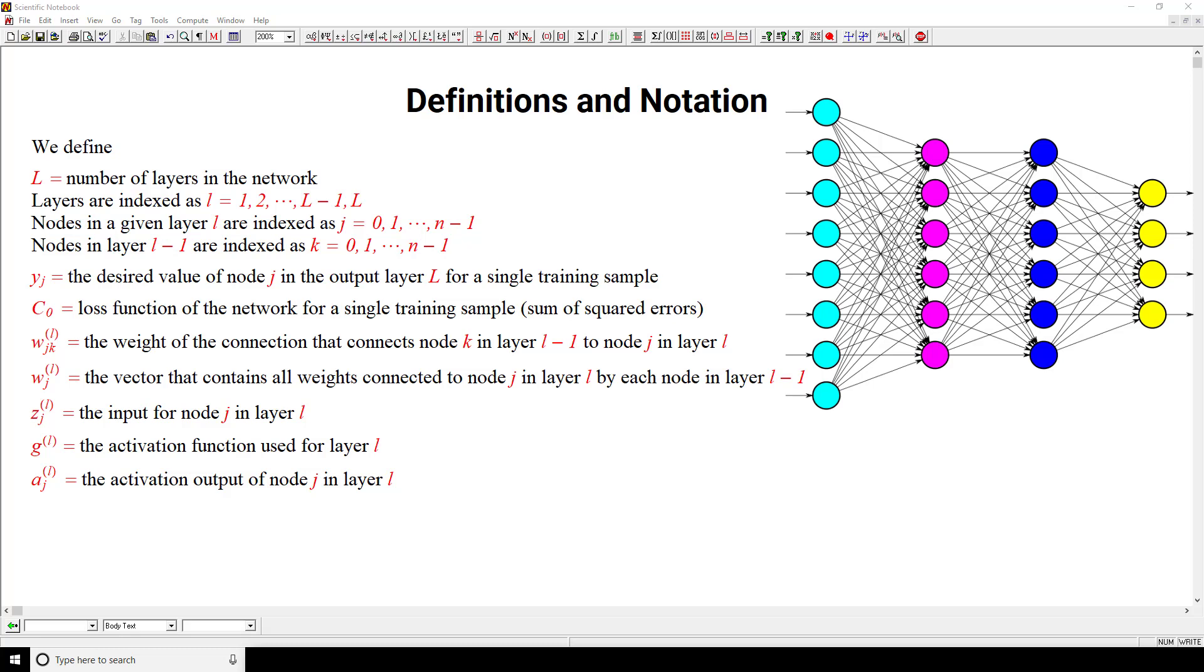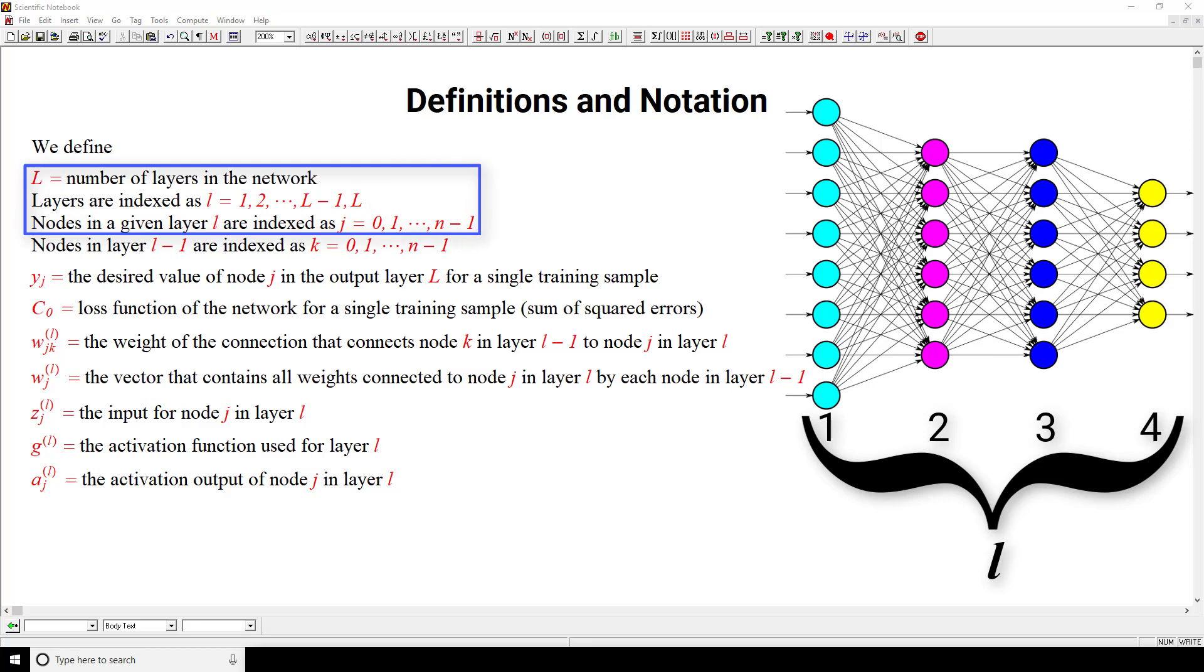We start out by defining big L as the number of layers in the network. Layers are indexed sequentially as l equals 1 all the way up to big L. The nodes in a given layer l are indexed as j equals 0 all the way up to n minus 1. And the nodes in a previous layer, which would be l minus 1, are indexed as k equals 0 up to n minus 1.